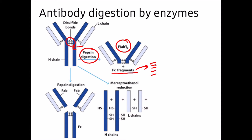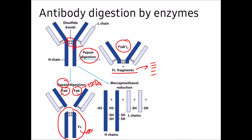When you treat an antibody with papain, it cleaves above the hinge region, above the disulfide bond. You get two Fab fragments and the whole Fc fragment. The molecular weight of each Fab fragment is approximately 50 kDa, the Fc fragment is approximately 50 kDa, and the F(ab')2 fragment is approximately 100 kDa.